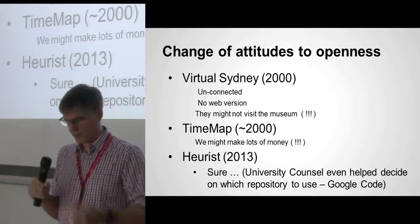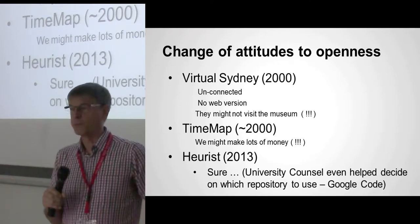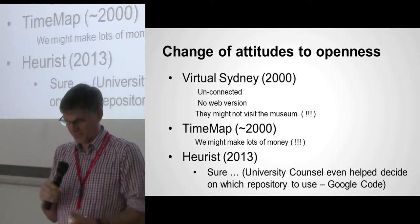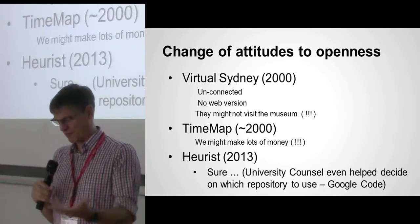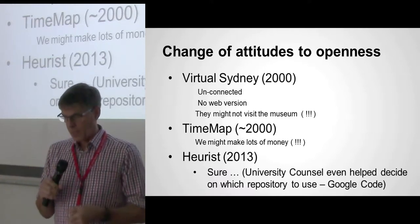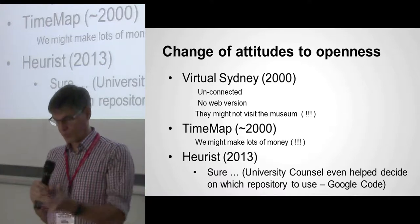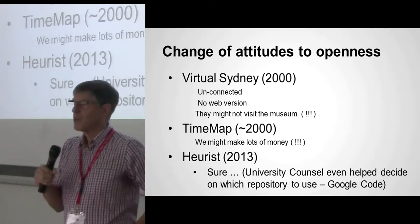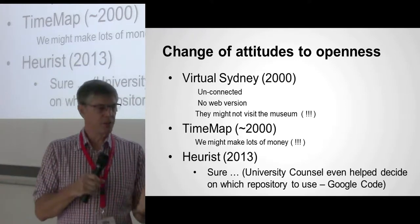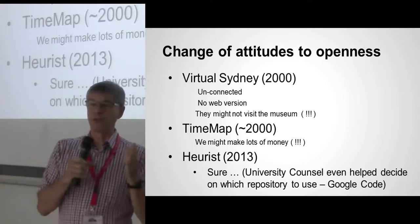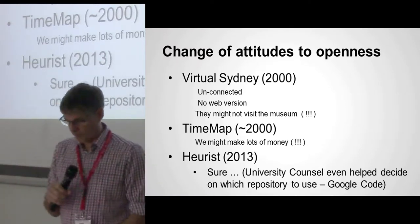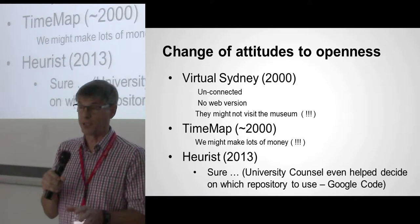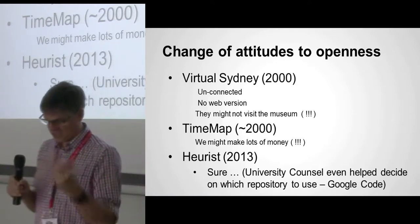I had to have meetings with the business liaison office — which has had about 15 names since — to convince them they weren't going to make lots of money out of TimeMap. It was just not going to happen unless they wanted to invest a few million, which they didn't. So eventually they said okay. That meant that when I came to make Heurist open source in 2013, there was no problem. The University Council was very helpful and looked at different open source licenses on Google Code and GitHub, deciding on Google Code. Unfortunately, Google Code is closing down next year, so we'll switch to GitHub, which isn't a big deal because we already use Git.